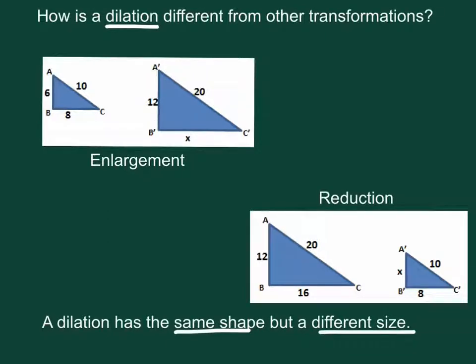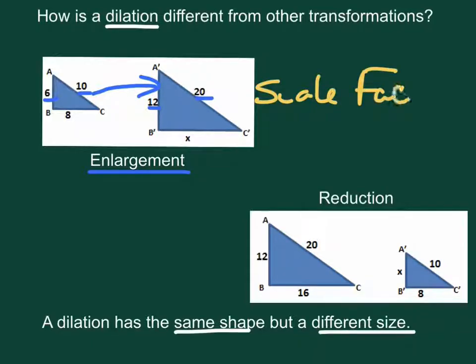We would say that if we go from a small triangle to a large one, we would call this an enlargement. In fact, you can see that each side was doubled. So we would even say that this has a scale factor of 2. It means every side is doubled.